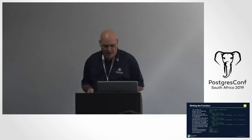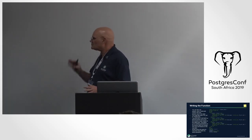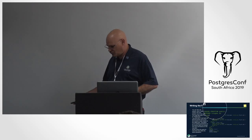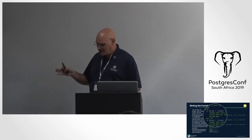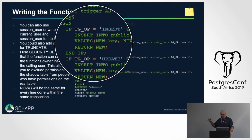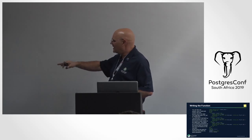For the trigger function code, we look at TG_OP — a system variable that has a value of insert, update, delete, or truncate — so we know what operation caused the trigger to execute. We can then have different code for each case: insert, update, and delete. On an insert, you capture the NEW values; on an update, you capture NEW values; on a delete, you capture OLD values.